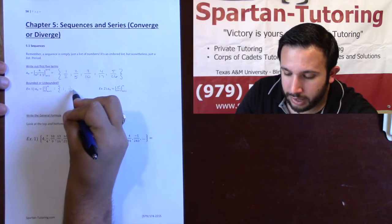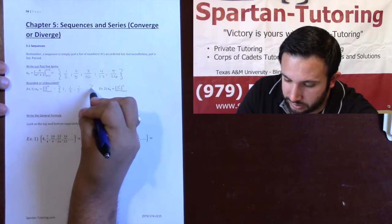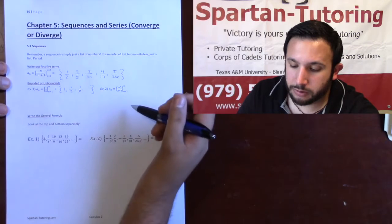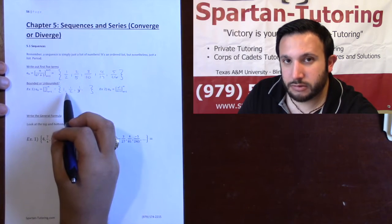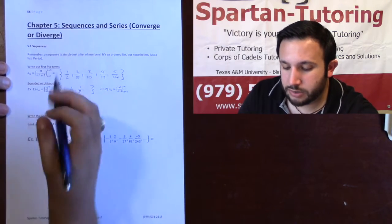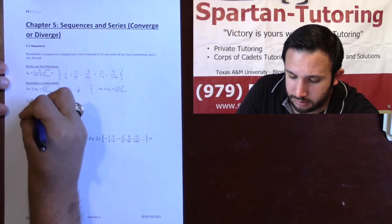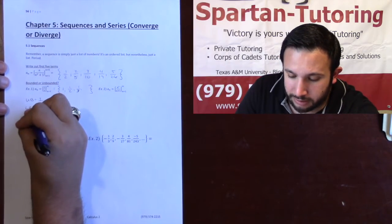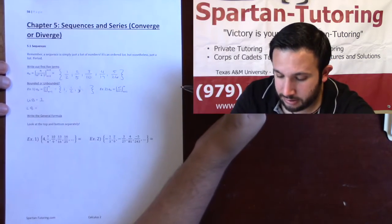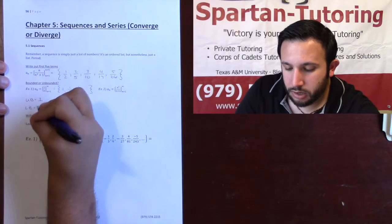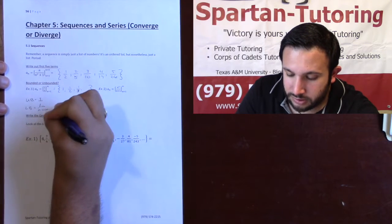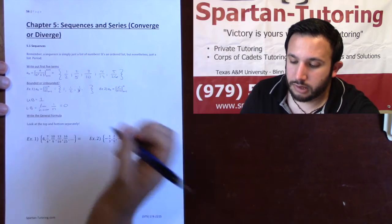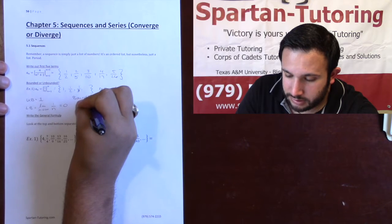Plugging 2 in gives 1/2; plugging 3 in gives 1/3, and so forth. What I'm figuring out is whether my sequence is getting bigger or smaller. I see this sequence is getting smaller — going from 1 to 1/2 to 1/3 — so my upper bound is 1, since no number will be bigger than 1. For the lower bound, since it's constantly decreasing, take the limit as n approaches infinity of 1/n, which equals 0.